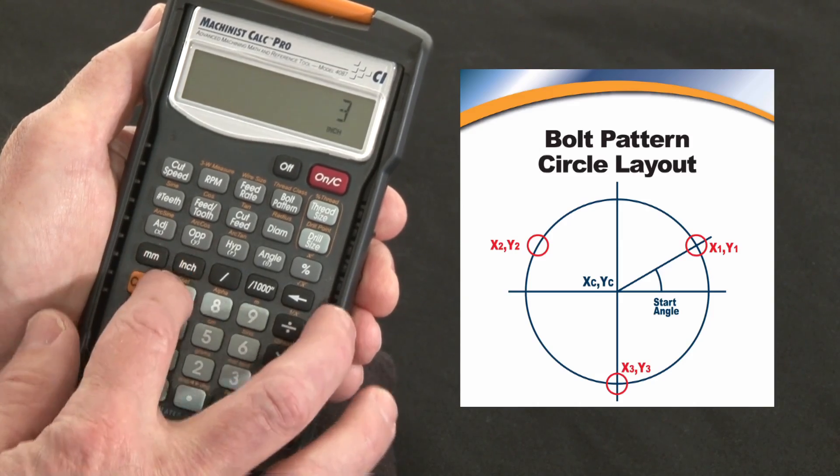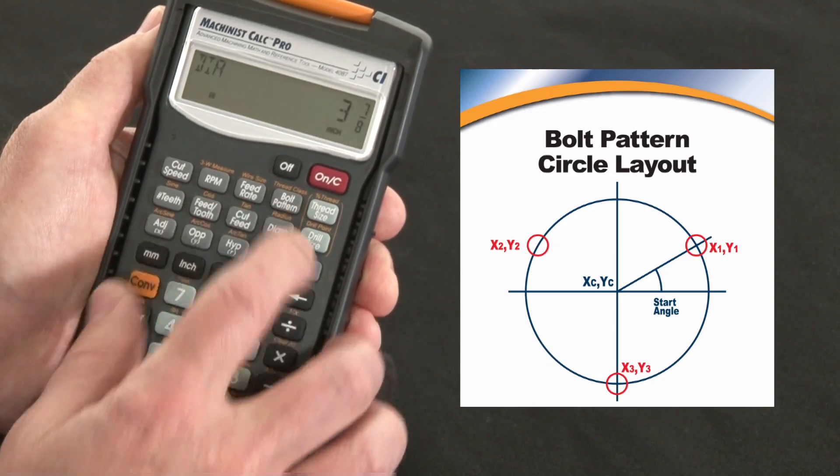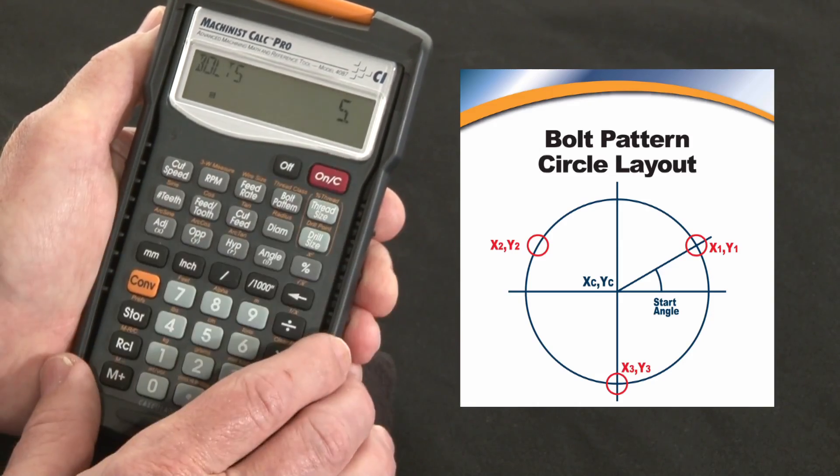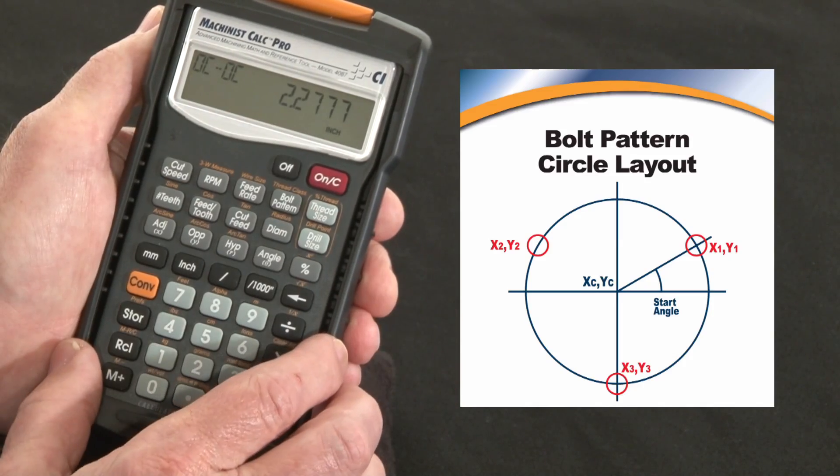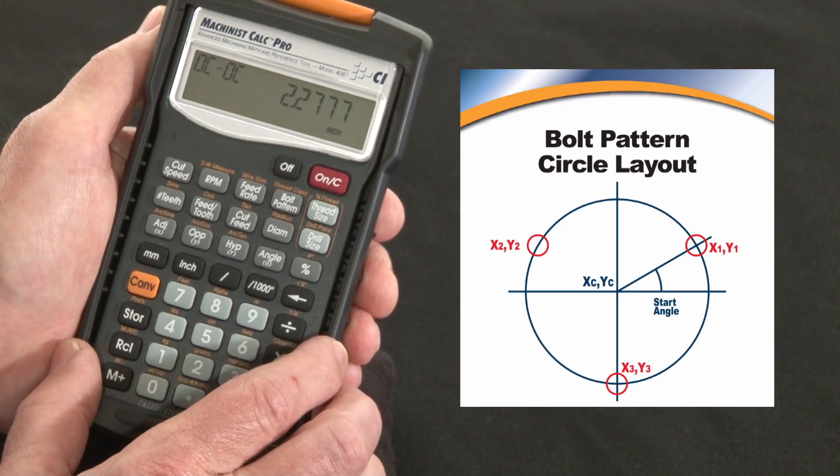Let's start off with a 3 7/8 inch diameter circle and we're going to put 5 bolts on that. So the first press tells me the on center to on center, that's the chord length that's going to be 2.277 inches from the center of each of those circles.